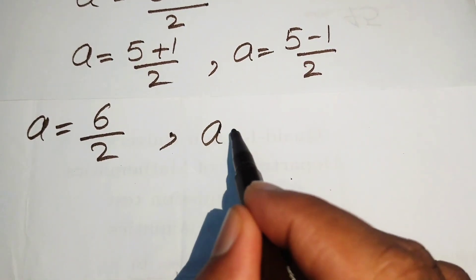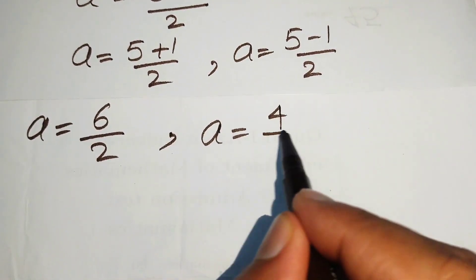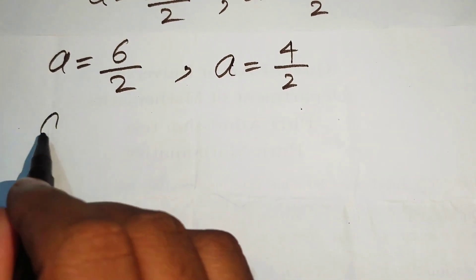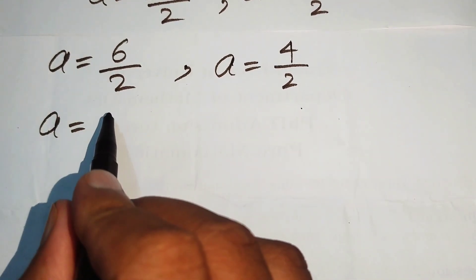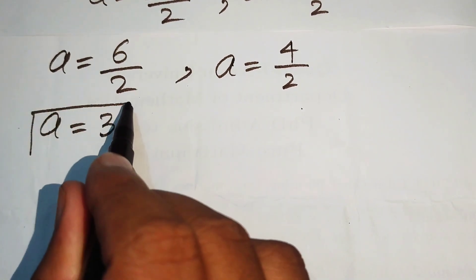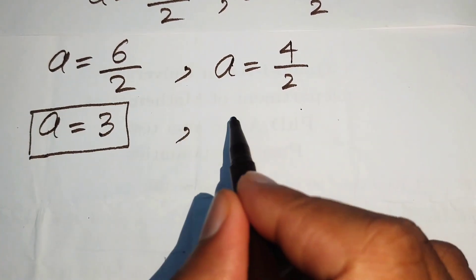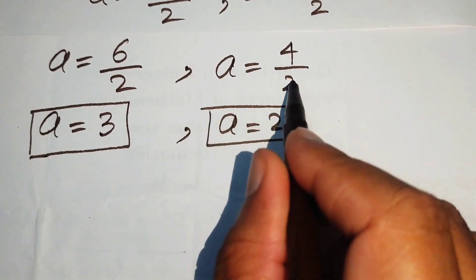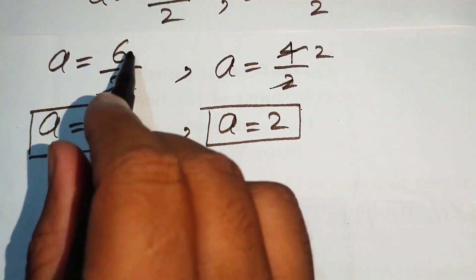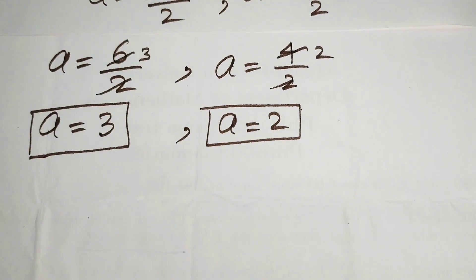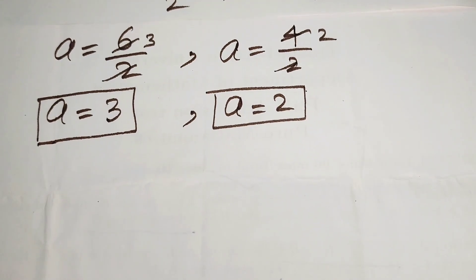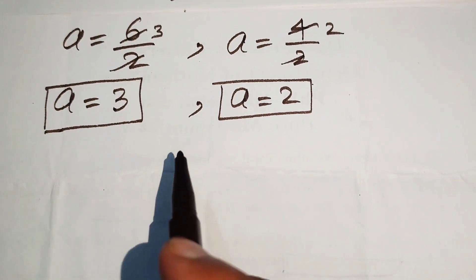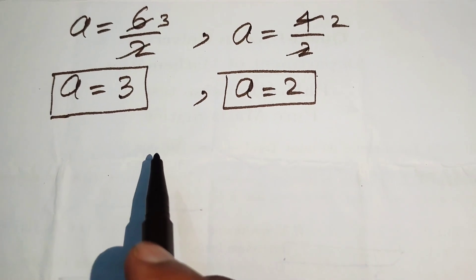For the positive case: a equals 6 over 2 equals 3. For the negative case: a equals 4 over 2 equals 2. So we have two values of a: a equals 3 and a equals 2. Now we find the corresponding values of b.